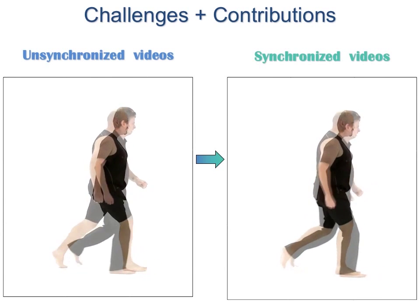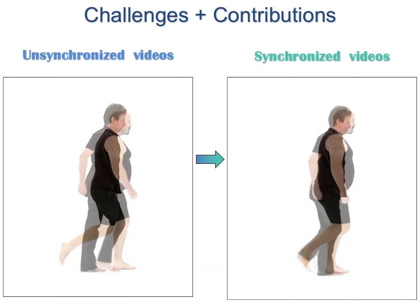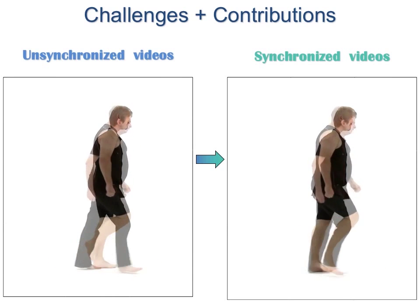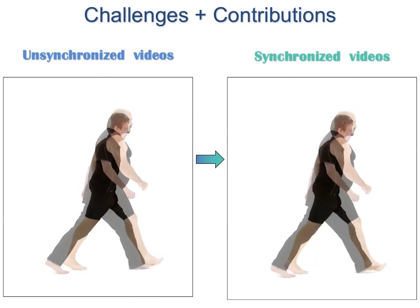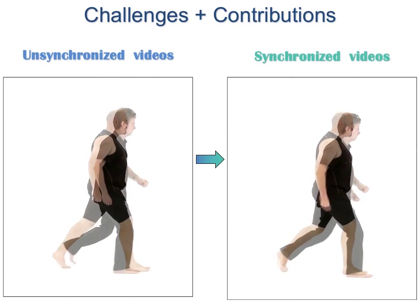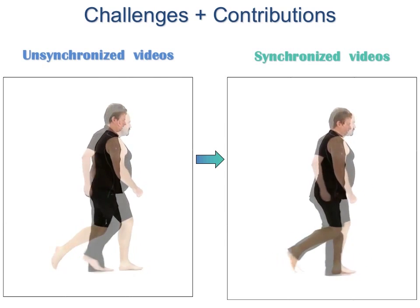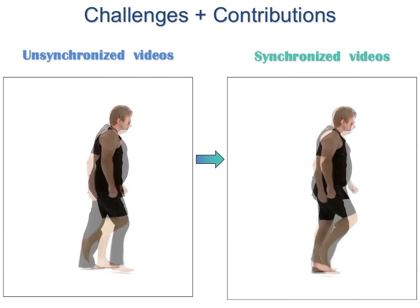Morphing video sequences presents several challenges. Often times the two videos are not temporally synchronized, as is the case of the two overlaid input videos shown on the left. One of our contributions is to synchronize the videos temporally to produce the intermediate result shown on the right.